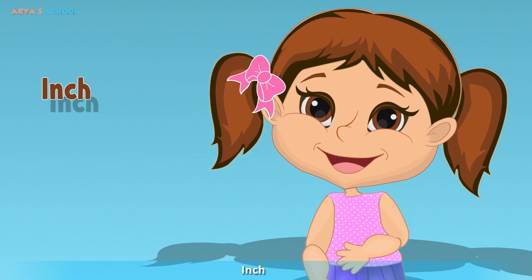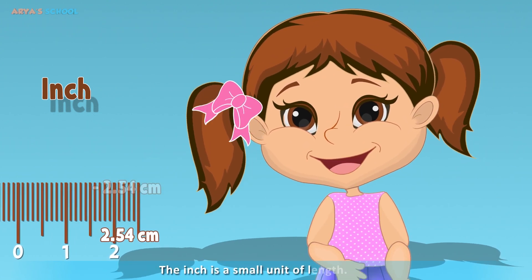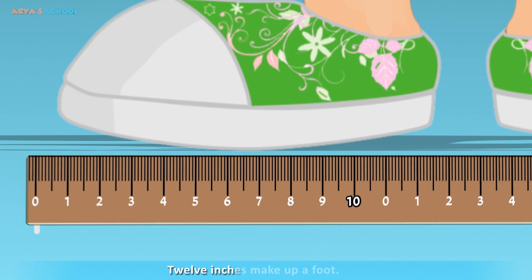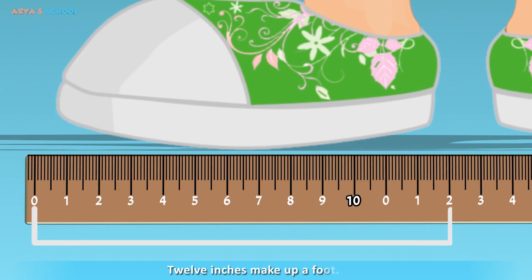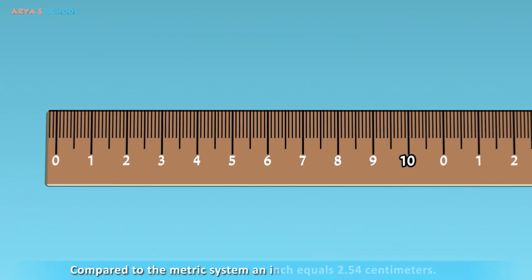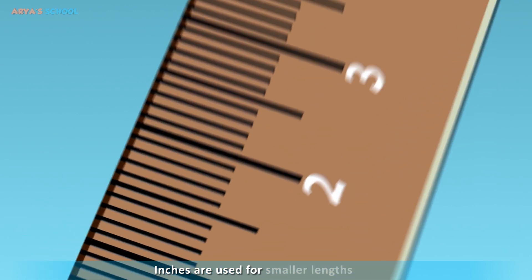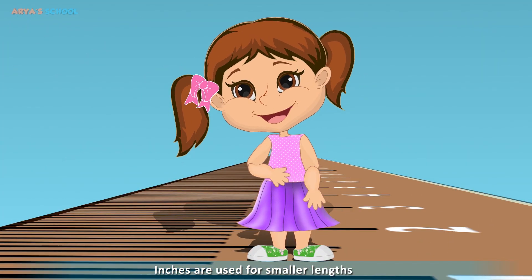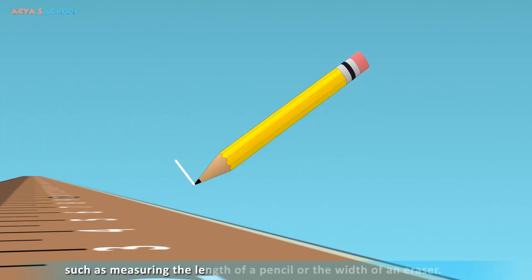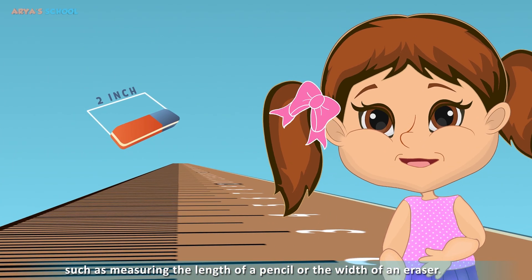Inch. The inch is a small unit of length. 12 inches make up a foot. Compared to the metric system, an inch equals 2.54 cm. Inches are used for smaller lengths such as measuring the length of a pencil or the width of an eraser.